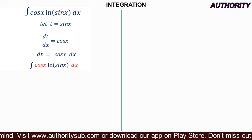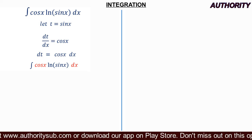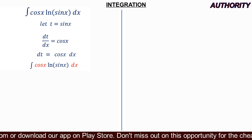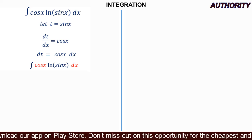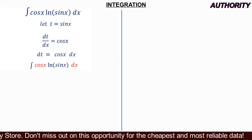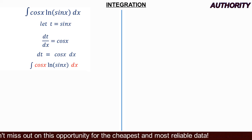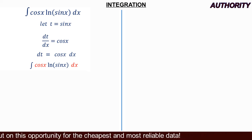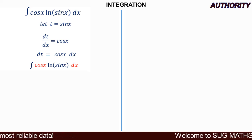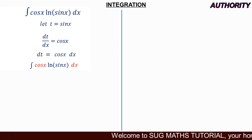Since we want to replace x, we have cos(x) and dx remaining. We substitute: dt = cos(x)dx, so we can replace cos(x)dx with dt. We replace sin(x) with t and cos(x)dx with dt.